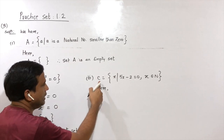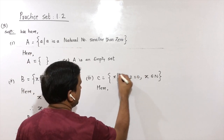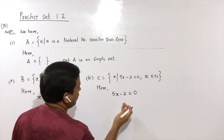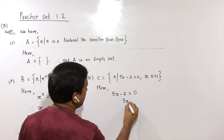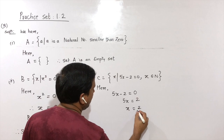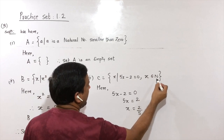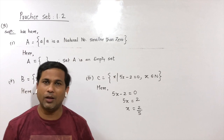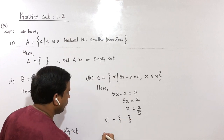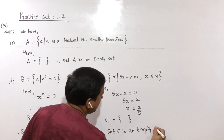Third: C = {X such that 5X − 2 = 0, where X belongs to natural numbers}. Solving gives 5X = 2, so X = 2/5. Since 2/5 is not a natural number but a rational number, it does not satisfy the condition. Therefore set C is an empty set.